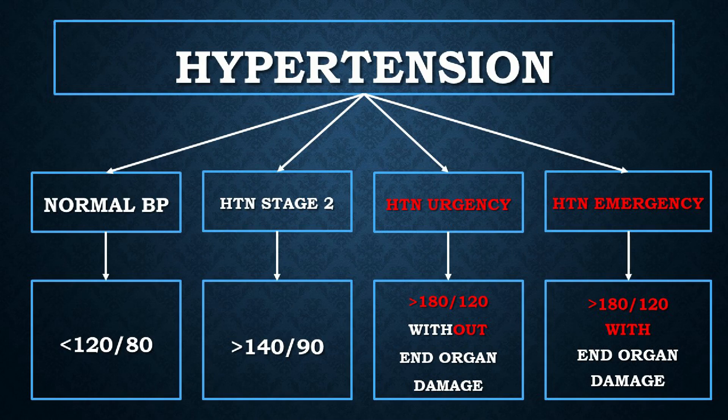On this slide, you can see that a normal blood pressure is below 120 over 80, and hypertension stage 2 is above 140 over 90. For details regarding what is hypertension and the latest guidelines, please check out my dedicated video on this topic. Hypertensive urgency is defined as blood pressure above 180 over 120 without end organ damage, and hypertensive emergency is blood pressure above 180 over 120 with acute end organ damage.